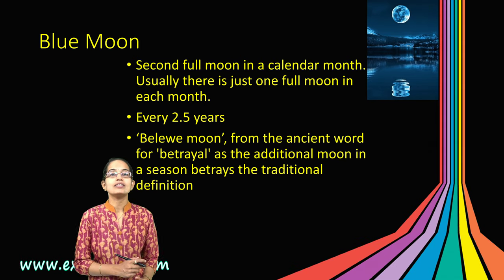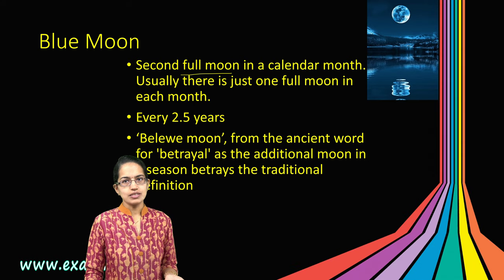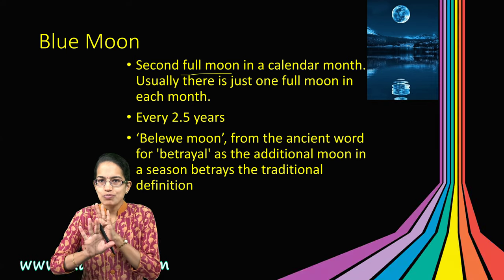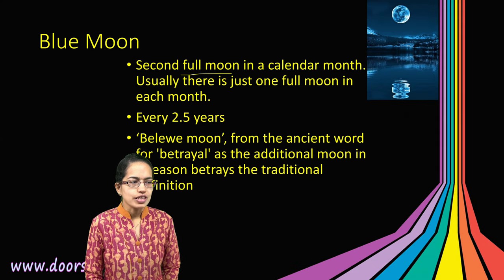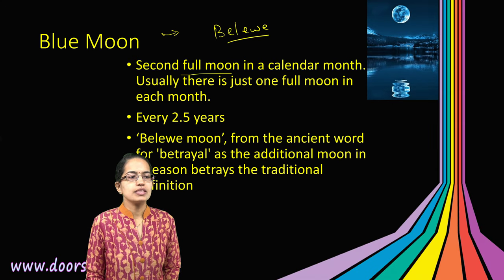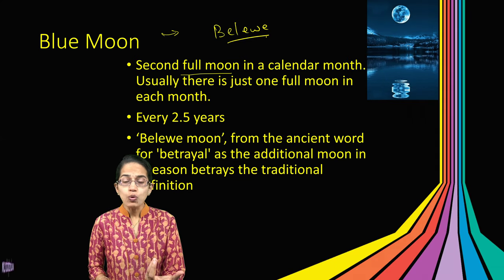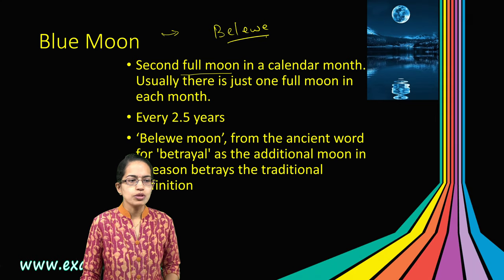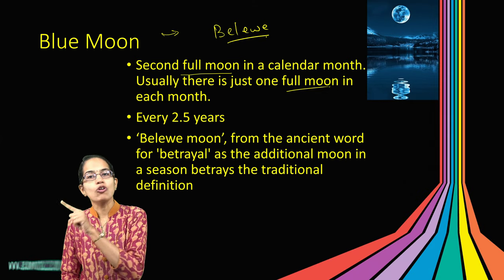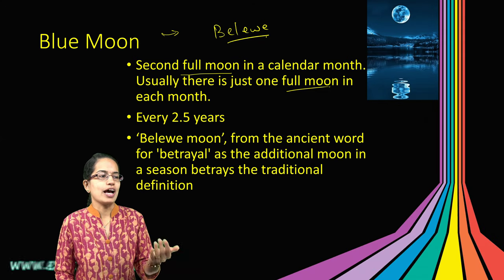The next is blue moon, which is the second full moon in a calendar month. This occurs nearly every two and a half years. It does not appear blue in color. The name is derived from 'bevel moon' — bevel means betrayal — because it betrays the normal cycle. Usually in one month you have just one full moon, but this is a second full moon seen in a month, betraying the normal pattern. This is also later called the blue moon.